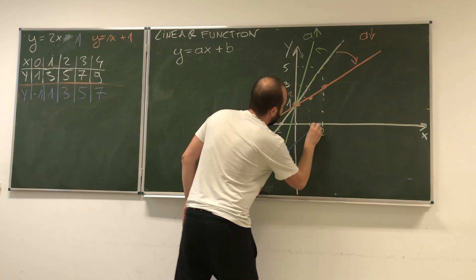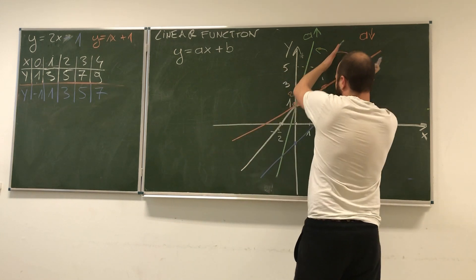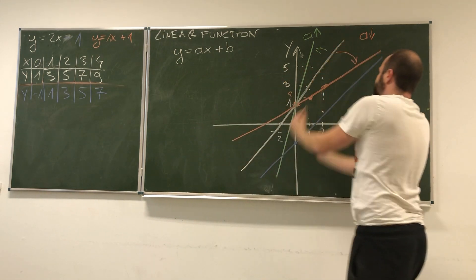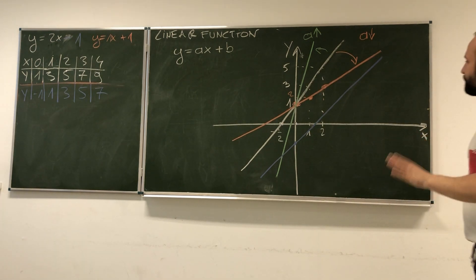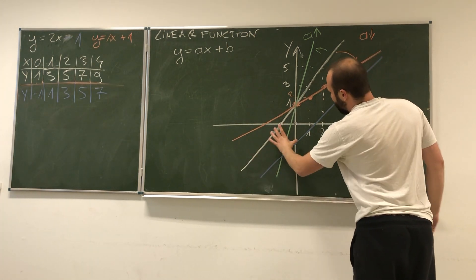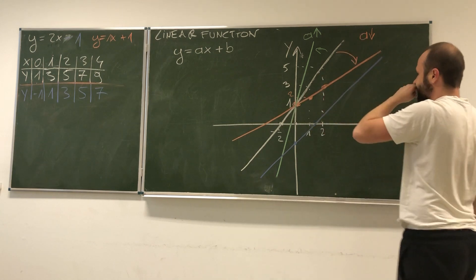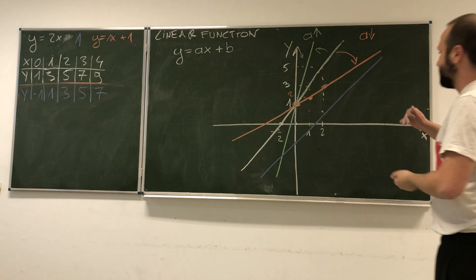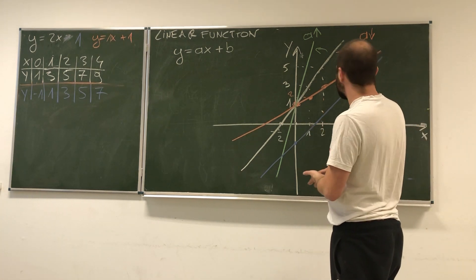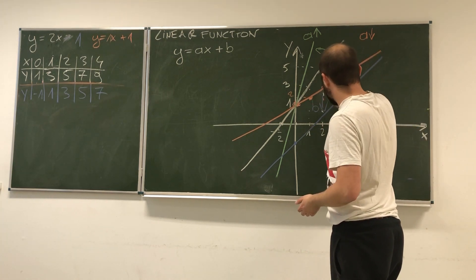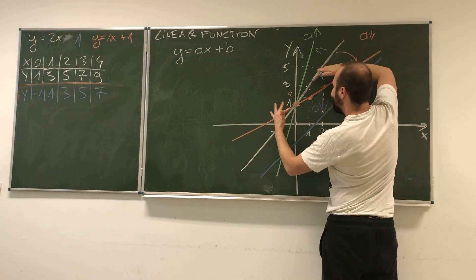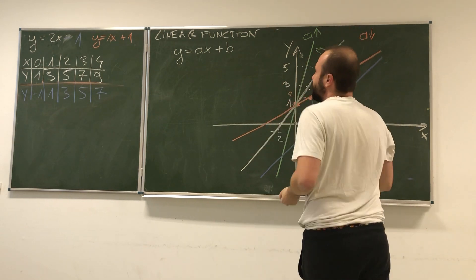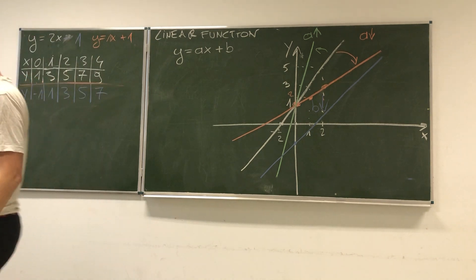We're assuming these two are parallel. All these distances are the same. We see again that if b is getting smaller, the function goes down. If b were getting higher, the function would be moving up.